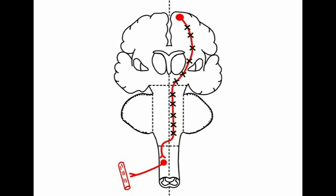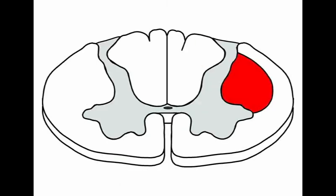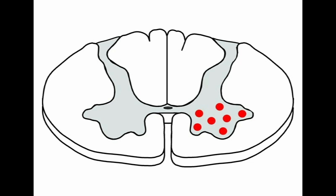Number three: an upper motor neuron lesion is on the opposite side of the clinical findings for a lesion above the decussation of the pyramids, whereas it is on the same side as clinical findings if the lesion is in the spinal cord. Number four: spinal cord lesions often give upper motor neuron signs below the level of the lesion from effect on the corticospinal tract, and lower motor neuron signs at the level of the lesion from effect on the ventral horn or the ventral nerve root. Number five: lower motor neuron signs are good for locating the level of a spinal cord lesion.